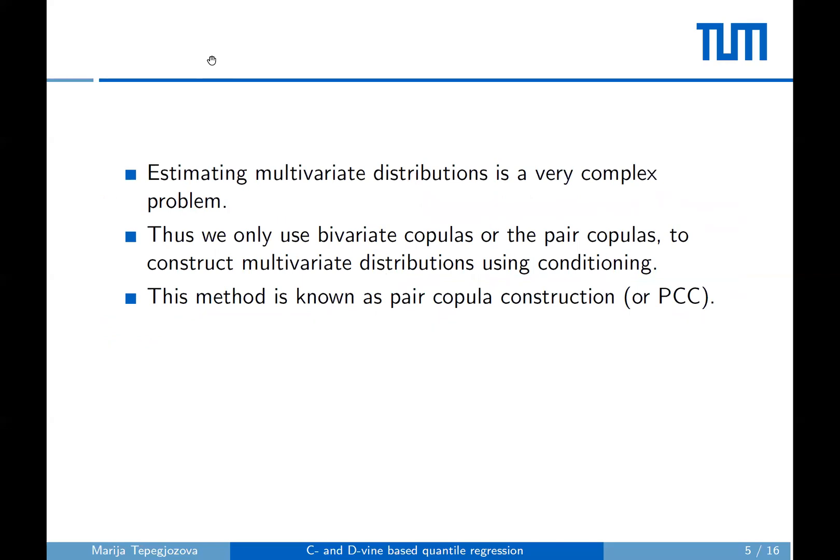However, estimating a d-dimensional copula is equivalent to estimating a d-dimensional multivariate distribution which is a very complex problem itself. It can be shown that any copula density decomposes into a product of conditional bivariate copula densities. We call those building blocks pair copulas. And going the other way around, it is always possible to also construct a valid joint distribution by specifying the pair copulas and their connections encoded in a sequence of trees, and this method is known as the pair copula construction.